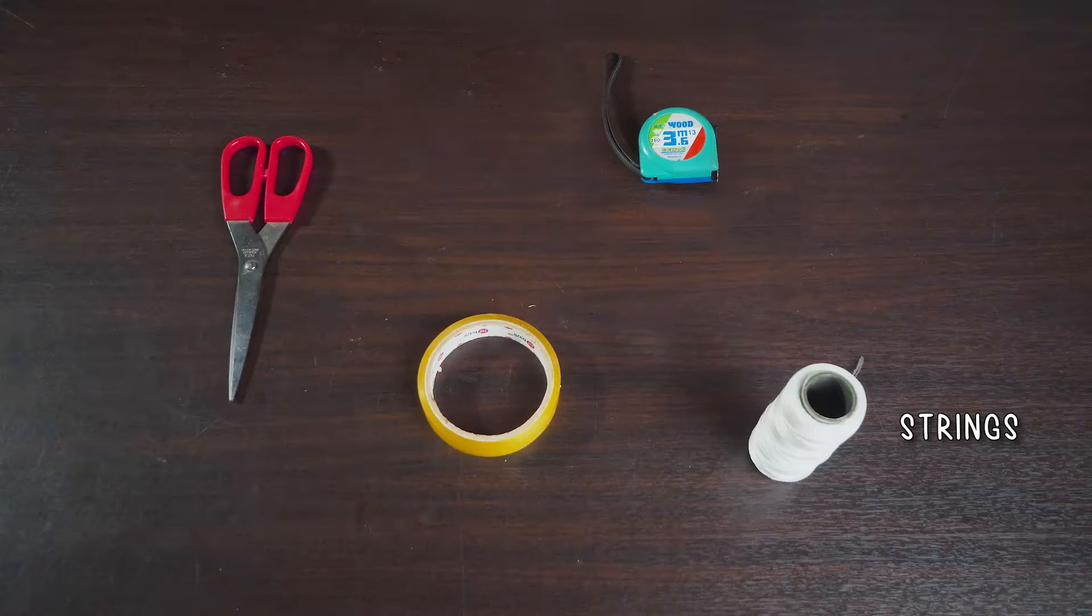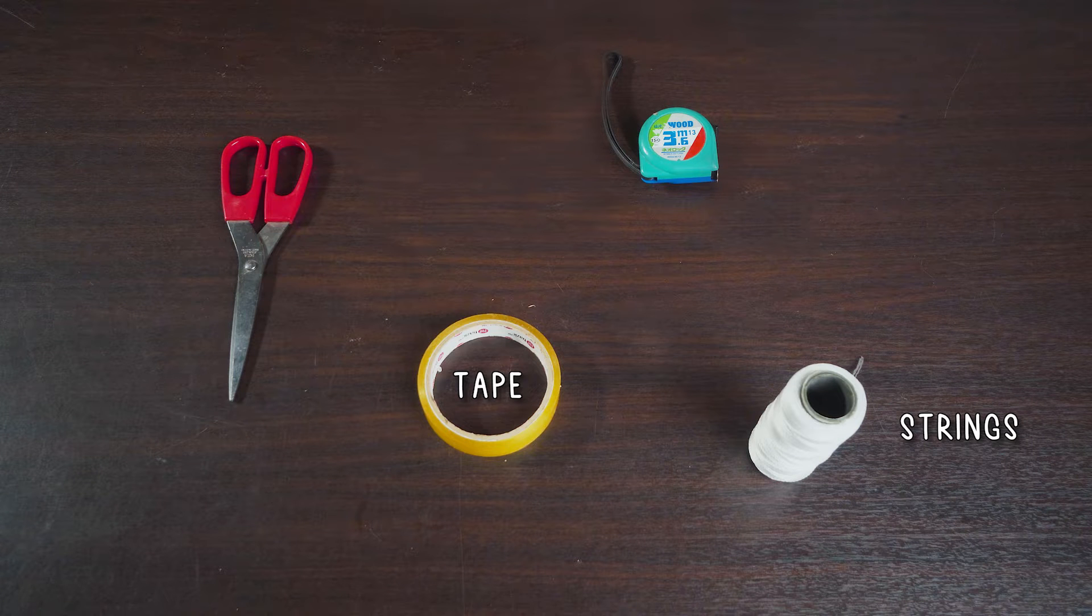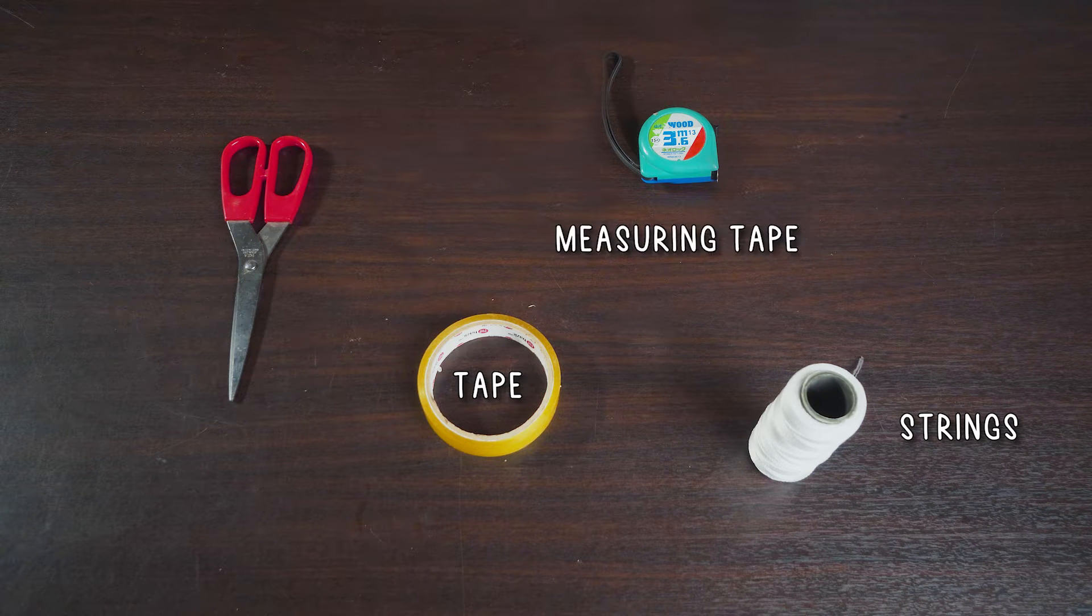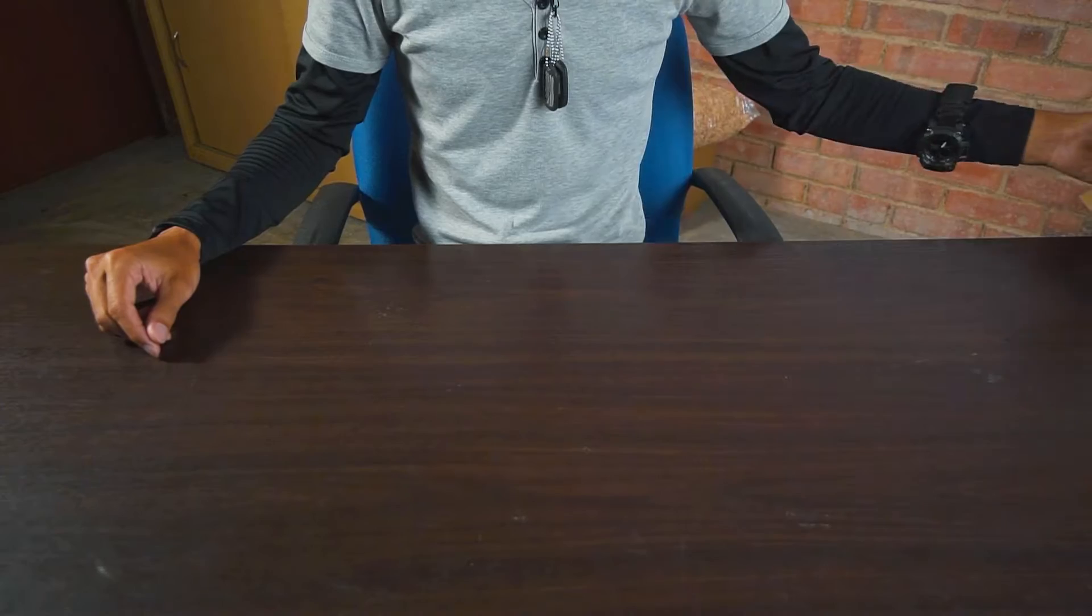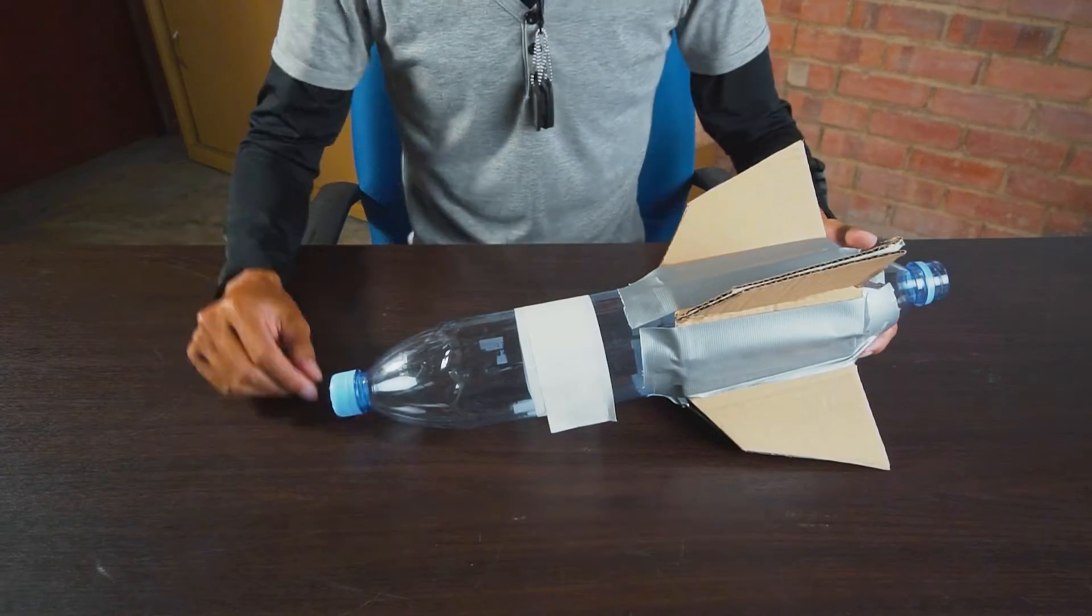One roll of string, one roll of tape to tape the strings onto the parachute, a measuring tape or ruler, scissors, and of course, your fully built water rocket.